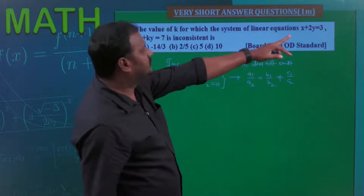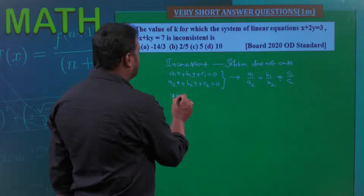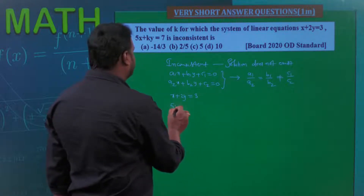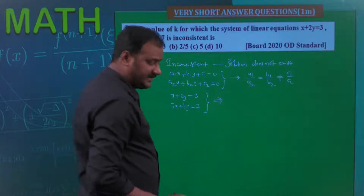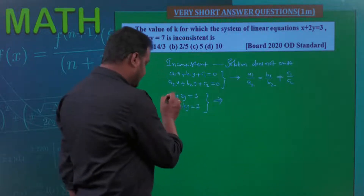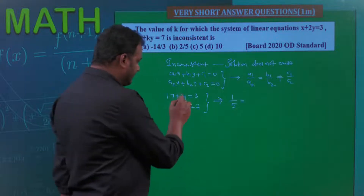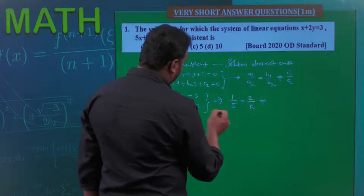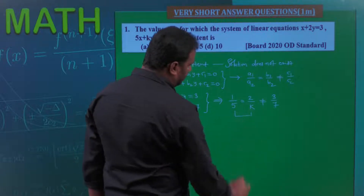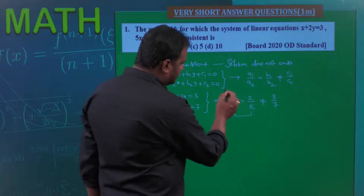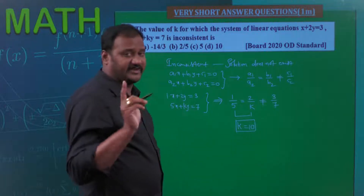The given equations are x + 2y = 3 and 5x + ky = 7. Since these two are inconsistent, a1/a2 (ratio of x-term coefficients) is 1/5, equal to b1/b2 (ratio of y-term coefficients) which is 2/k, and this is not equal to c1/c2 which is 3/7. Since 1/5 = 2/k, by cross multiplication: k = 10. We got the value of k = 10, but verify it.